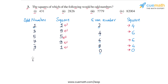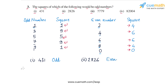Now let's apply this observation to all four parts. In part one, the number is 431, which is an odd number, so the square of this number will also be odd. In part two, the number is 2826, which is an even number, so the square will also be even. In part three, the number is 7779, which is an odd number, so the square will also be odd. In part four, the number is 82004, which is an even number, so the square will also be even.